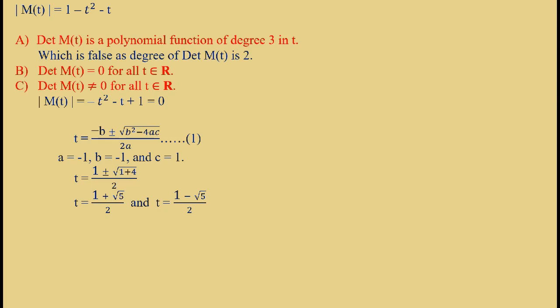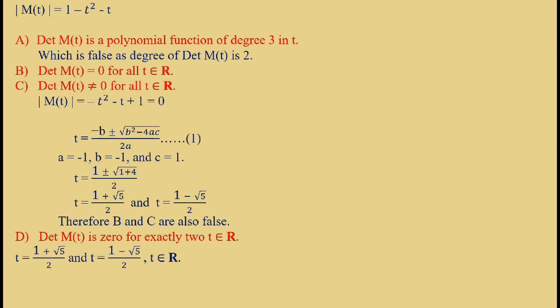These are the two values for which determinant of M(t) is equal to 0. Therefore, B and C are also false. Now, Option D: Determinant of M(t) is 0 for exactly 2 t belongs to R, which is true as t = (1 + √5)/2 and t = (1 - √5)/2 are the two values for which the determinant of M(t) is 0 and both of them belongs to R.